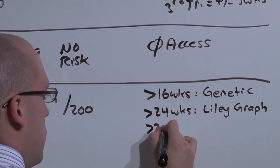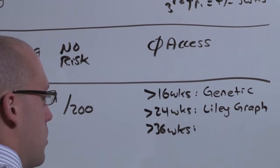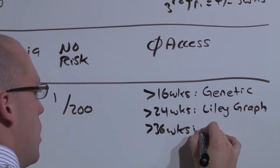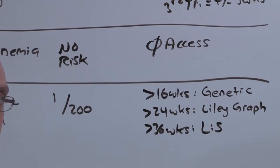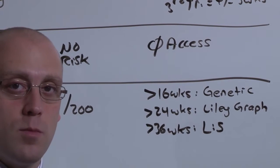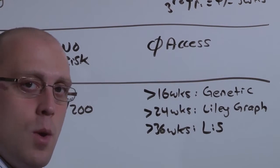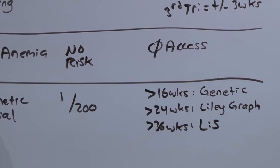And if it's greater than 36 weeks towards the end of delivery, you can use it to assess the lecithin to sphingomyelin ratio to determine if the baby needs any steroids before delivery. So amniocentesis has a bunch of potential uses. But really, in this lecture, we're talking about the greater than 16 weeks to get genetic material.